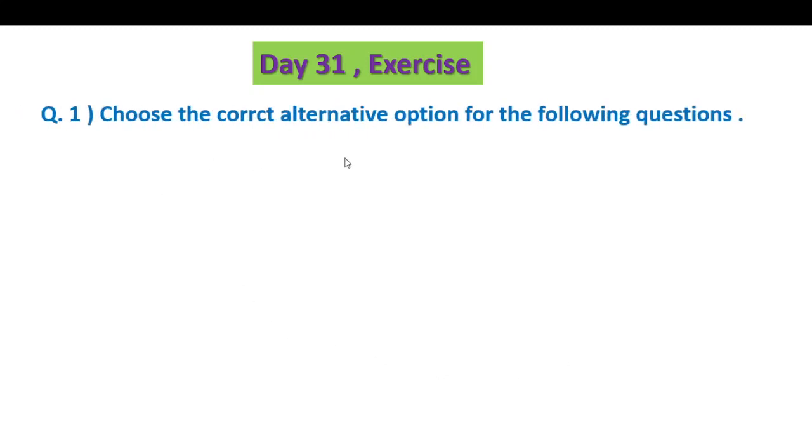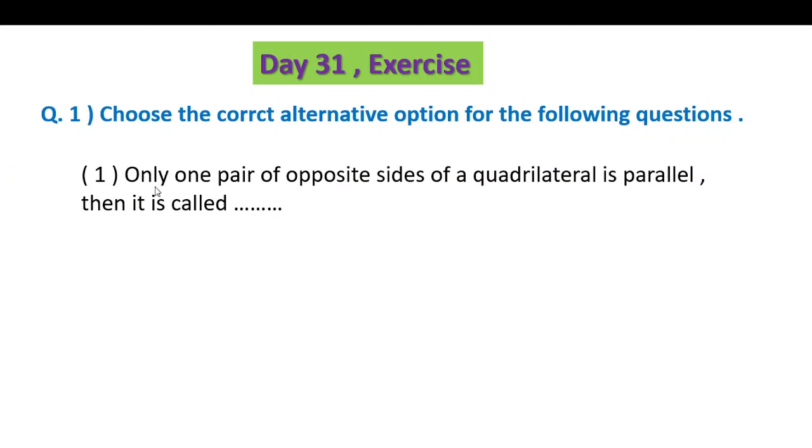Choose the correct alternative option. First, only one pair of opposite sides of a quadrilateral is parallel, then it is called? If opposite sides, only one pair is parallel, what is the quadrilateral called? Look at the options: parallelogram has both pairs parallel, rectangle also has both opposite sides parallel. Rhombus also. Trapezium - trapezium has only one pair of opposite sides parallel. Therefore our answer is trapezium.